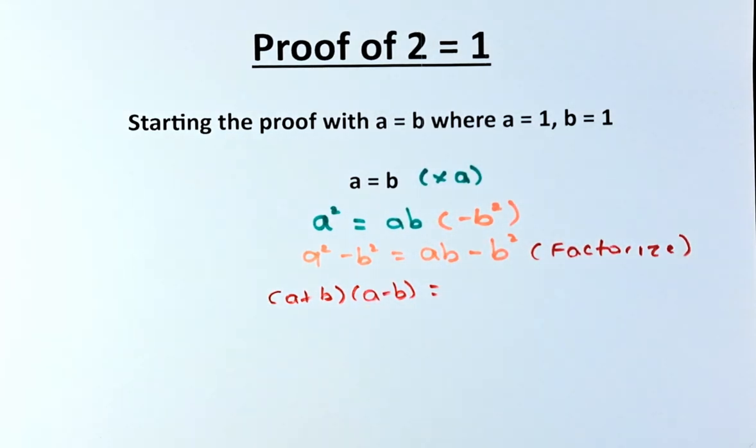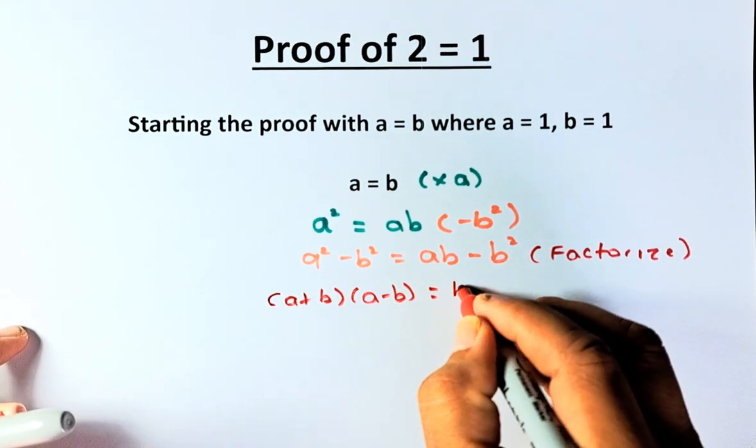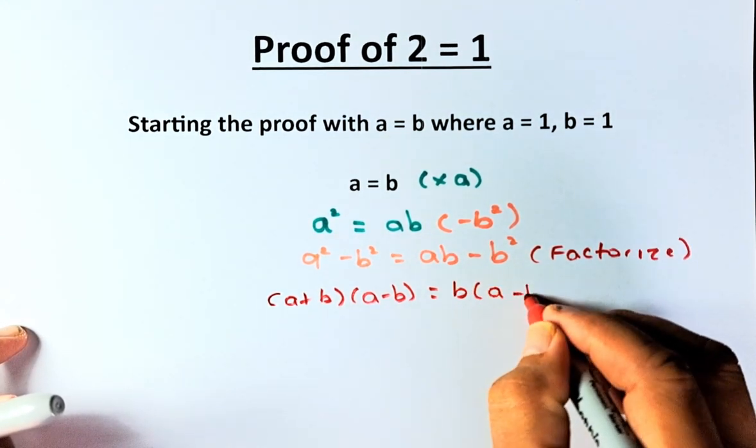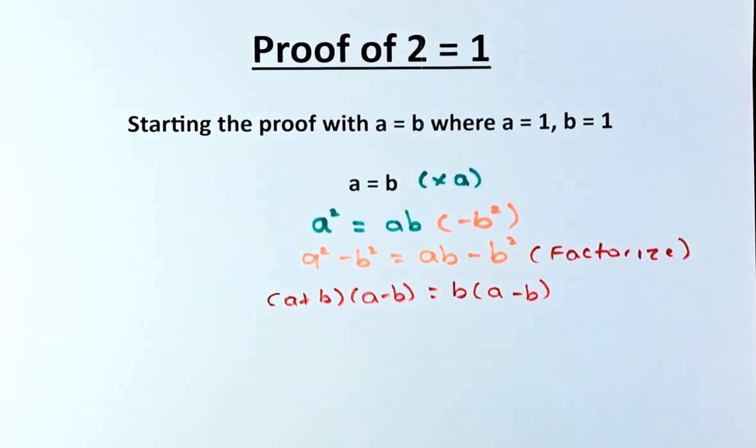And on the left hand, on the right hand side, you take out B as a common factor and what you're left with A minus B. Hopefully you are following me so far.